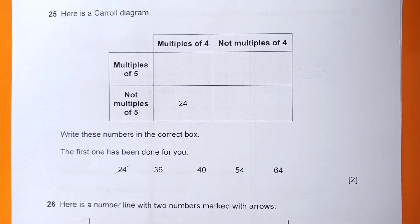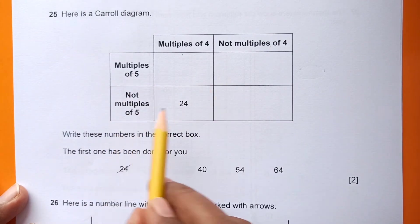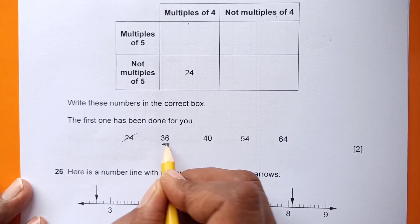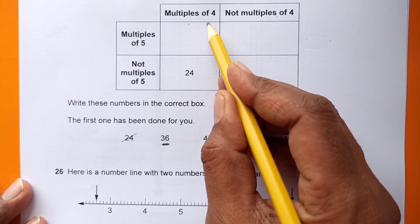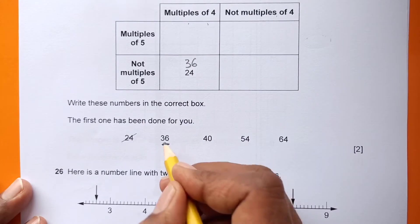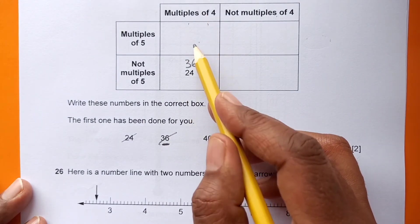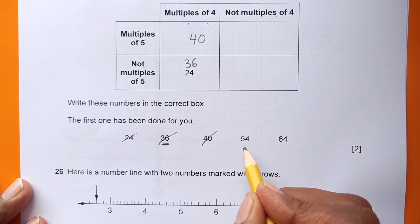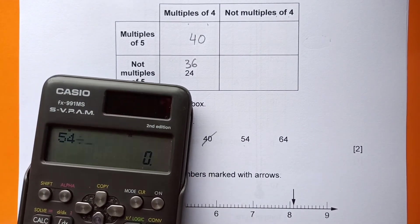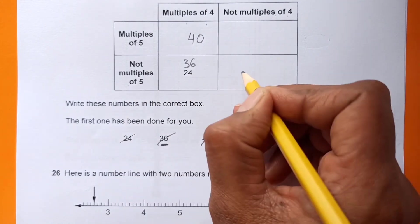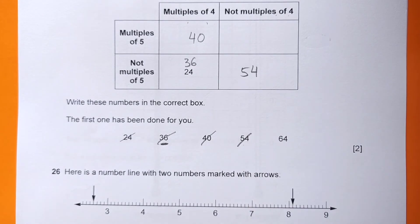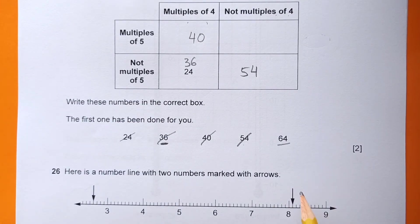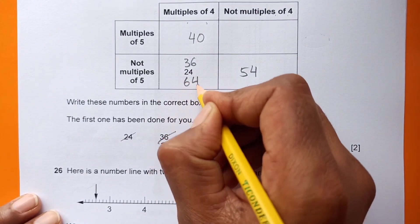Number 25: Here is a Carroll diagram - multiples of four, not multiples of four, multiples of five, and not multiples of five. Write these numbers in each box. 36 is a multiple of four but not a multiple of five, so 36 will come here. 40 is a multiple of four and also a multiple of five. 54 is not a multiple of four and not a multiple of five, so 54 goes here. 64 is a multiple of four but not a multiple of five, so 64 will come here.